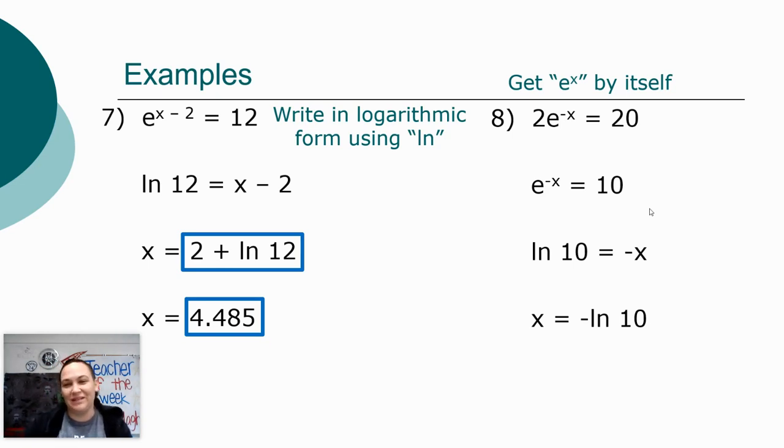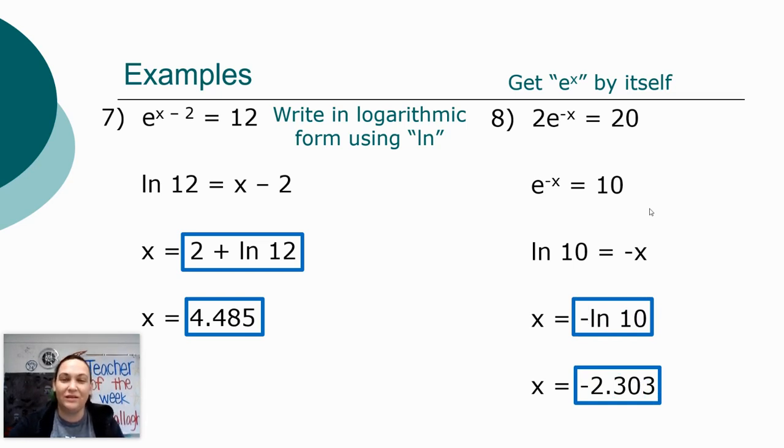This is my exact answer. Then you can type that into your calculator to get your rounded answer. Negative the natural log of 10 is my exact answer, and negative 2.303 is my rounded answer.